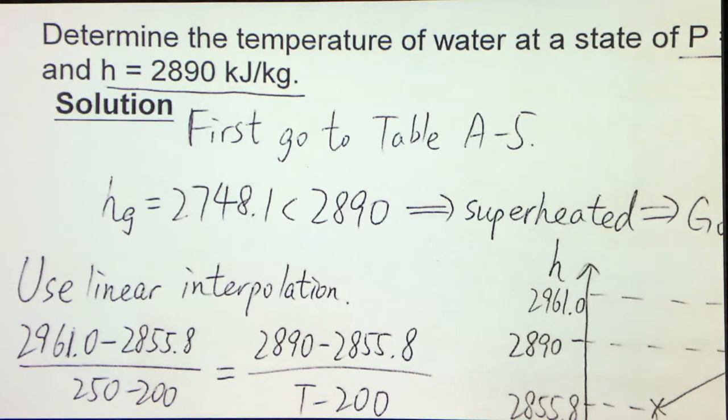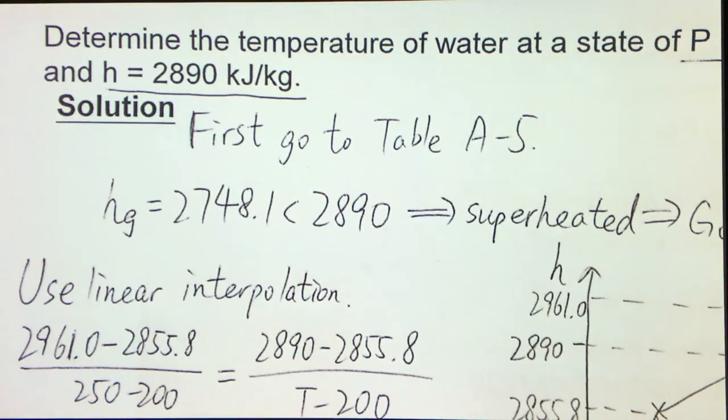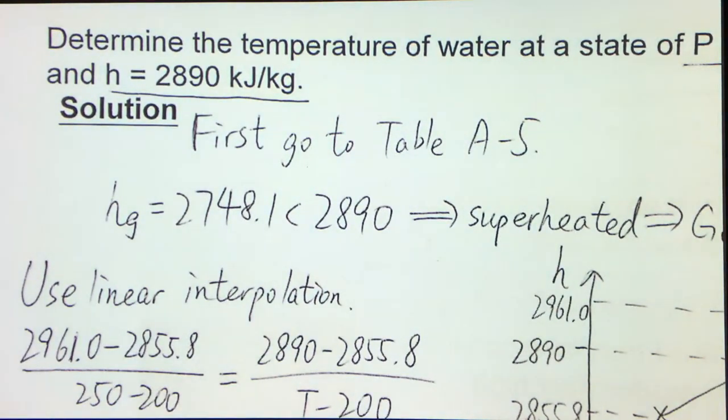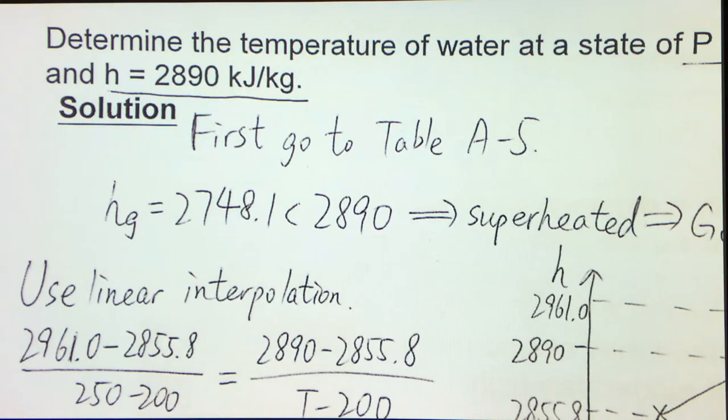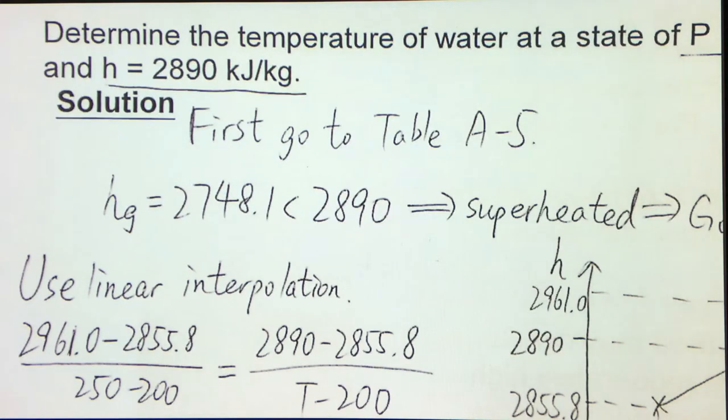If it is in between, then it is a saturated liquid vapor mixture. If it is out of the saturated liquid or saturated vapor value, then it will be either compressed state or in a superheated state. We need to always use different tables simultaneously in order to find out the properties that we want. I will show this in the next few examples. So that's example nine.